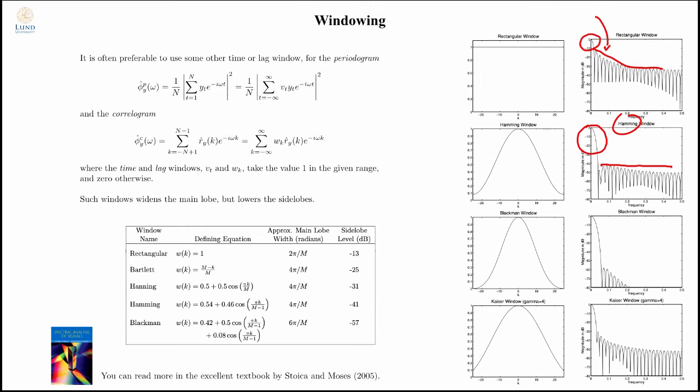You can reduce the variability that you get due to the side lobes by adding the window. When I have a window that has much stronger side lobe suppression, the main lobe is wider. So there's a trade-off between the width of the main lobe and the suppression of the side lobes.